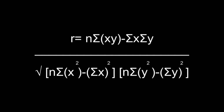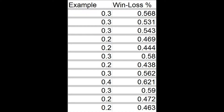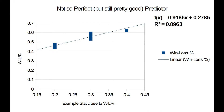r is determined using this equation. And if the r-squared value is 1, as in our example graph, the independent variable perfectly describes the dependent variable. But if our example statistic is about 0.2 less than that win-loss percentage, the graph would look something like this, with an r-squared value of approximately 0.9.